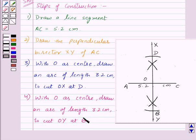Now, we have located all the points. That is, A, B, C and D. So, now, to get the required rhombus, we just need to join AB, BC, CD and DA. So, let's join them.